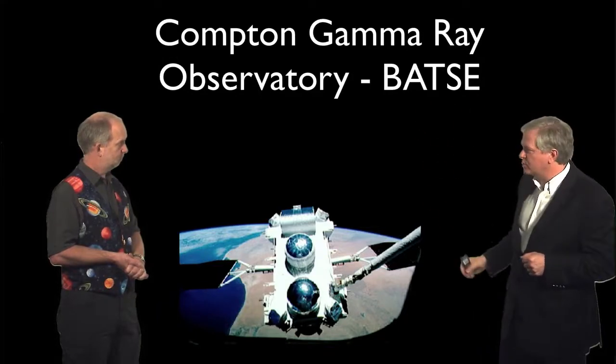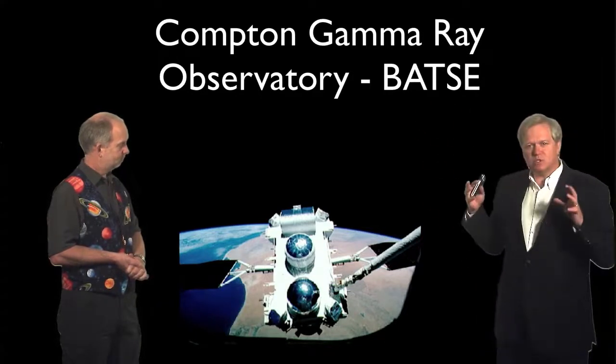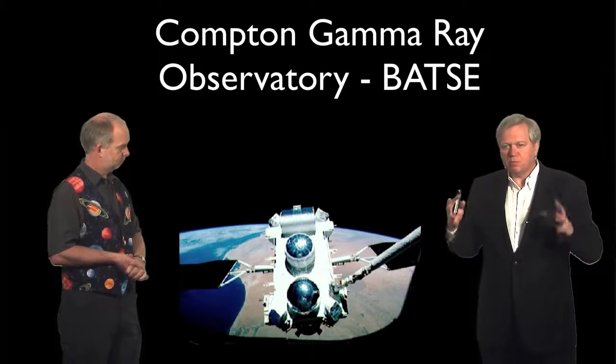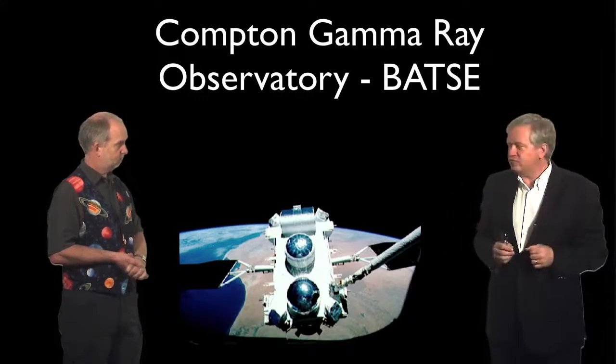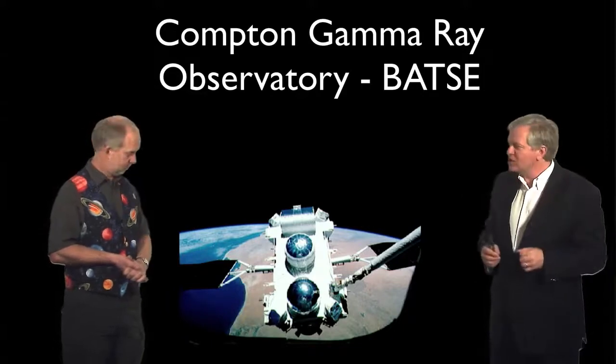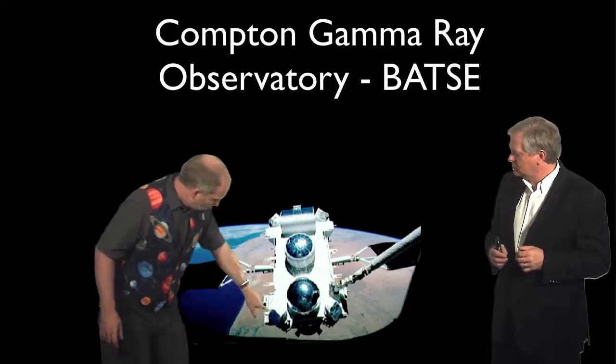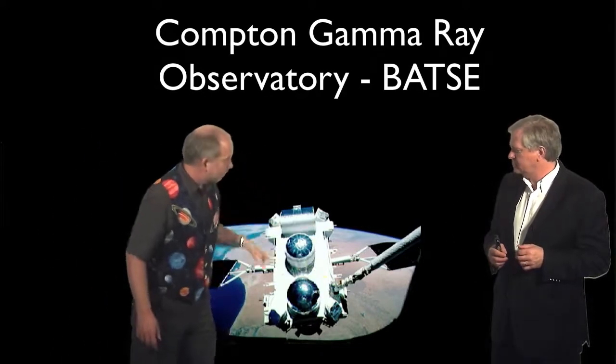BATSE is a long acronym, which we won't go into, and BATSE was interesting because it was much bigger than any other detectors we had flown in space. These were giant scintillators, and there were eight of them on the corners of the satellite here, pointing in each direction.